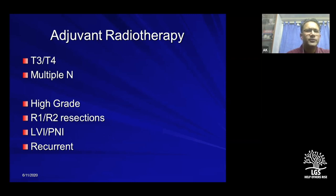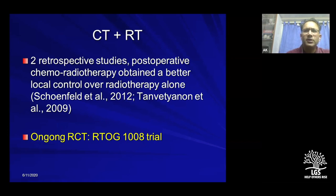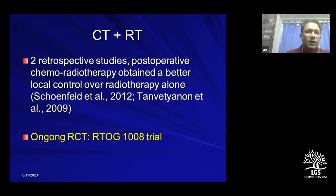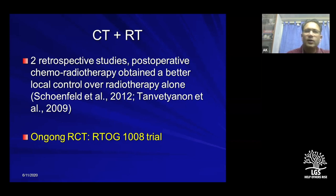Adjuvant radiation therapy indications haven't changed radically: multiple nodes, T3/T4 tumors, high grade, high grade, R1/R2 resections, lymphovascular invasion, perineural invasion, or recurrent tumors. What has changed is the consideration of adding chemotherapy. Evidence is largely extrapolated from squamous cell carcinoma data and the RTOG 1008 trial, part of which was recently presented at ASCO. Retrospective data suggests better local control with chemoradiation. Very selectively — in patients with high grade, multiple nodes, and extranodal extension — chemotherapy may be added to radiation.